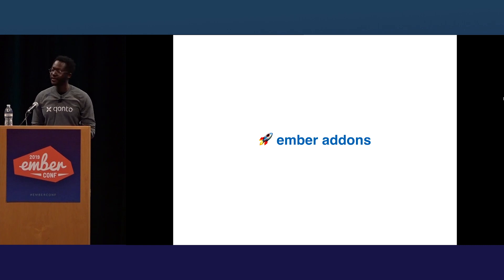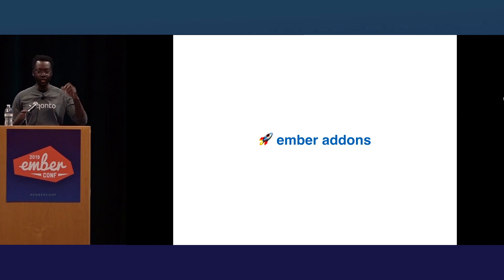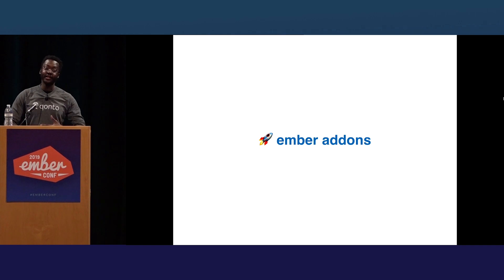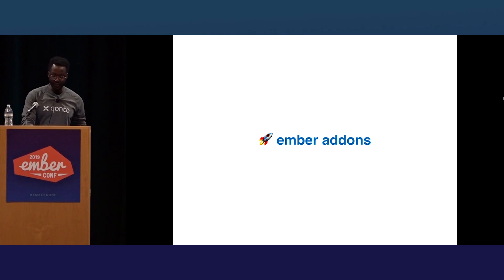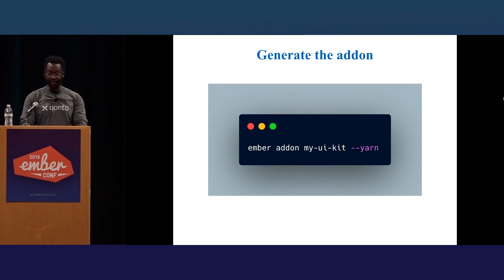We used add-ons. I like to think of add-ons as just NPM packages with superpowers. They can hook into your application to extend functionality, add new components, new styles, and even modify your build pipeline, as we will see later. To create an add-on, just type ember addon and the name of the add-on.